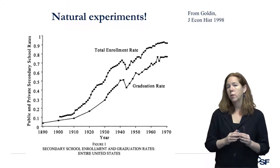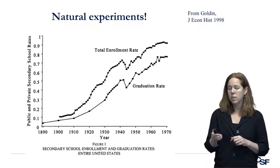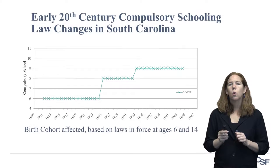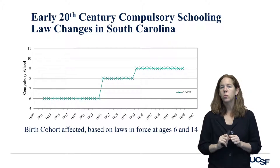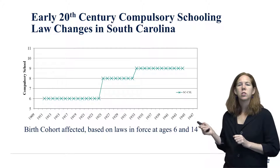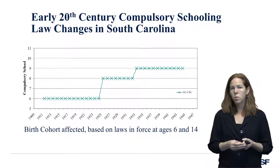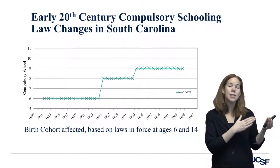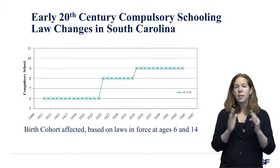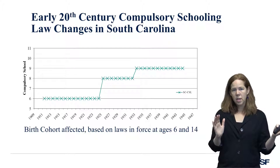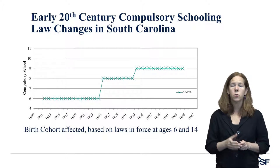There was de jure racial segregation of schools and this pattern was delayed for African Americans until later in the century, but you can see similar patterns there too. One reason educational attainment increased is that states changed their laws about how much schooling people were required to attend. For example, in South Carolina at the beginning of the century they only required students to attend 6 years of school — students could begin at age 7 and leave at age 13. But all states since around 1915 have had laws regulating when children need to enter school and how early they could drop out, and nearly all states changed those laws over the 20th century.